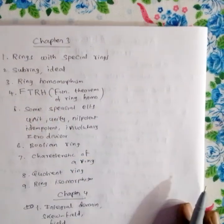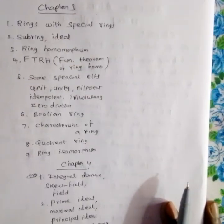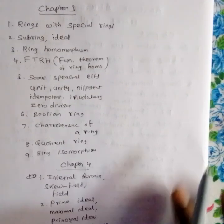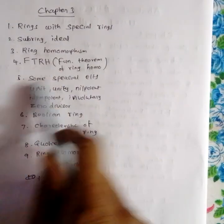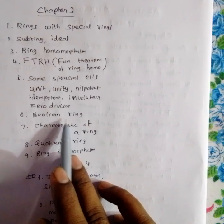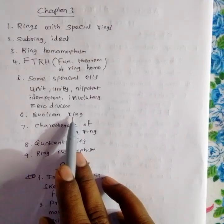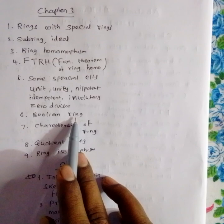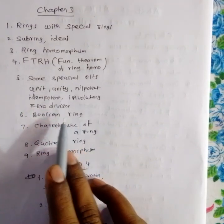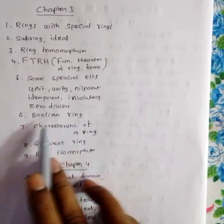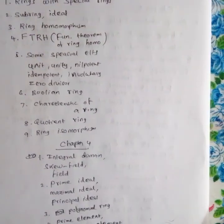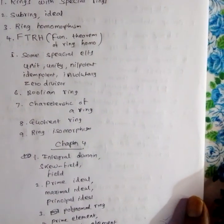Some special elements of rings include: units, nilpotent elements, idempotent elements, involutory elements, and zero divisors. We will also cover the Boolean ring. The characteristic of a ring is a very important topic.